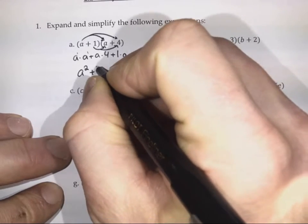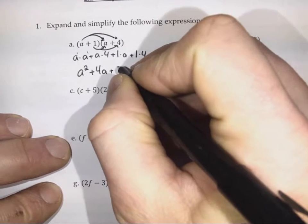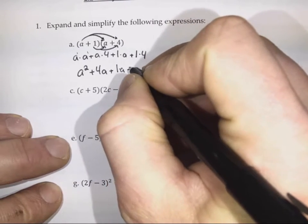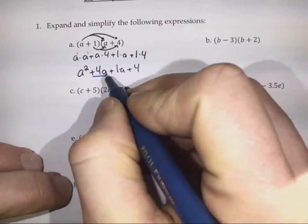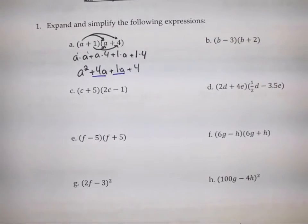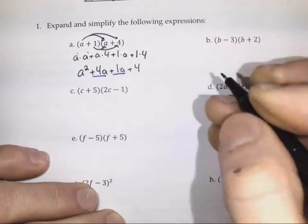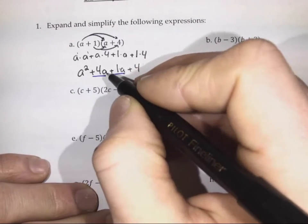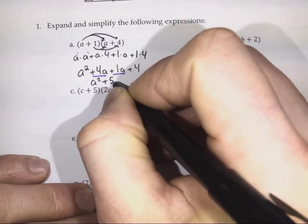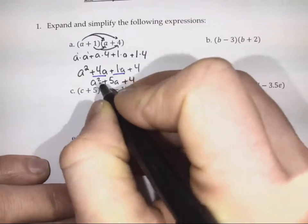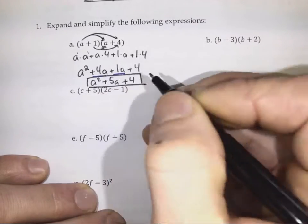A times 4 we can write as 4A, plus 1A. And then I'm going to group like terms. So I can see that I've got two terms with variable A with the same power, which is an exponent of 1. So I can add 4A's to another A — it's going to give me A squared plus 5A plus 4. That 5A is just this 4A plus one more A.